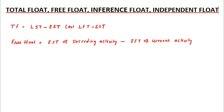Next is interference float. That means the portion of the total float which affects the succeeding activity but does not affect the project completion. The formula for interference float is: Total Float minus Free Float.